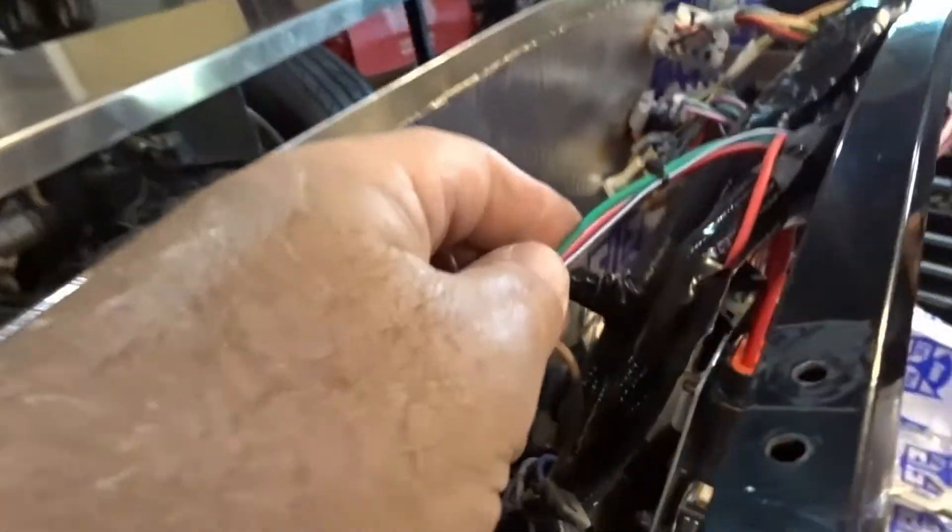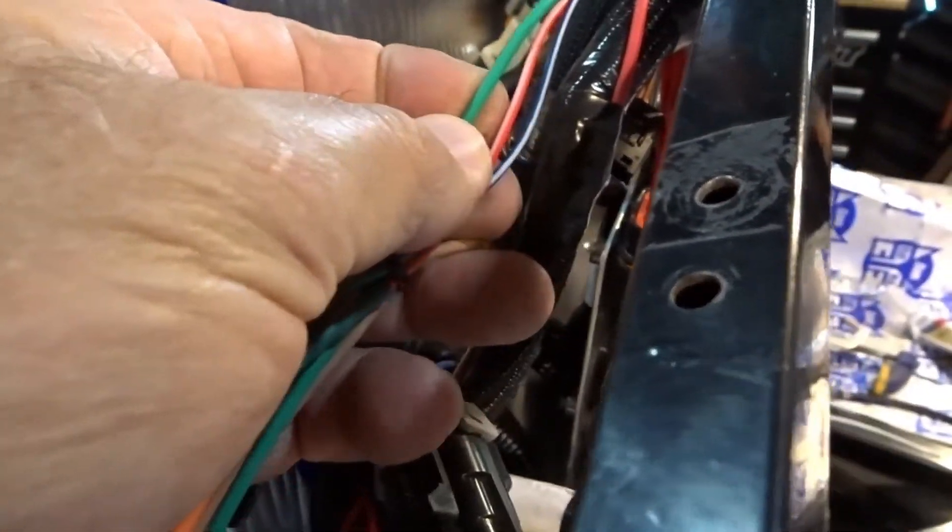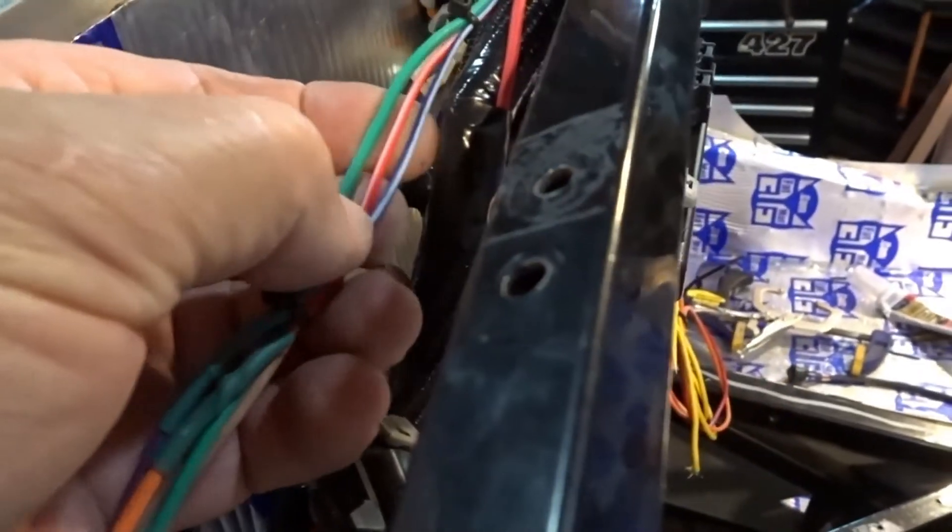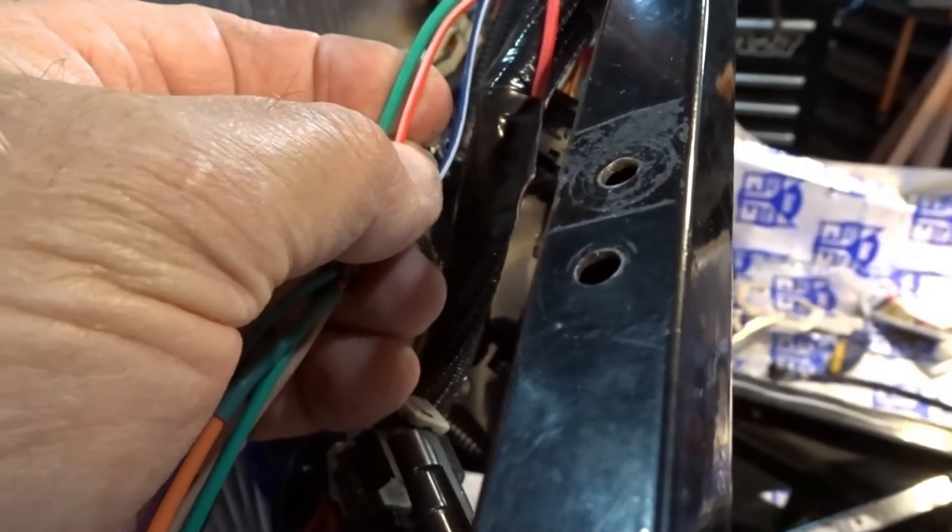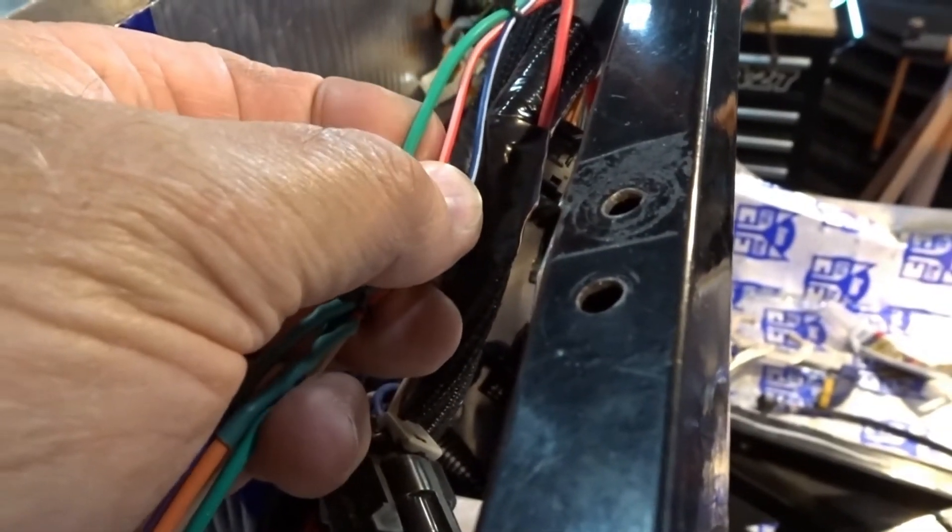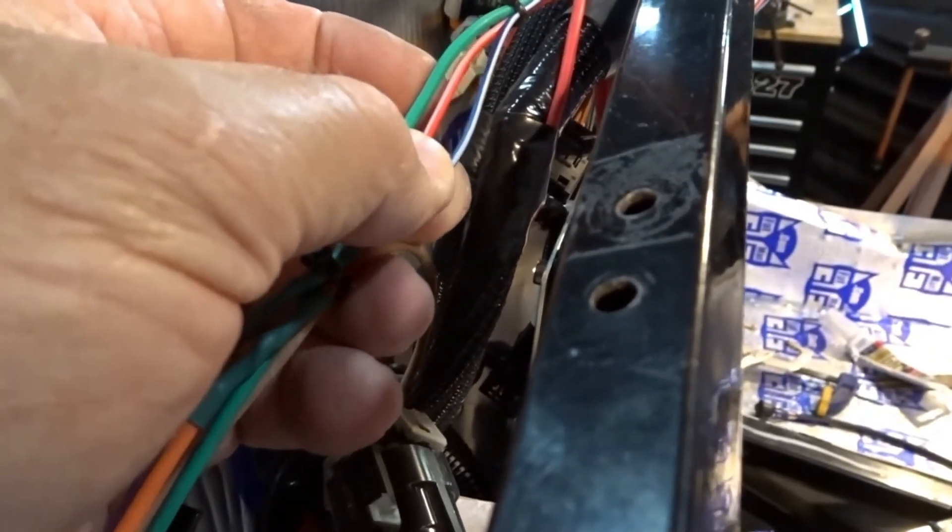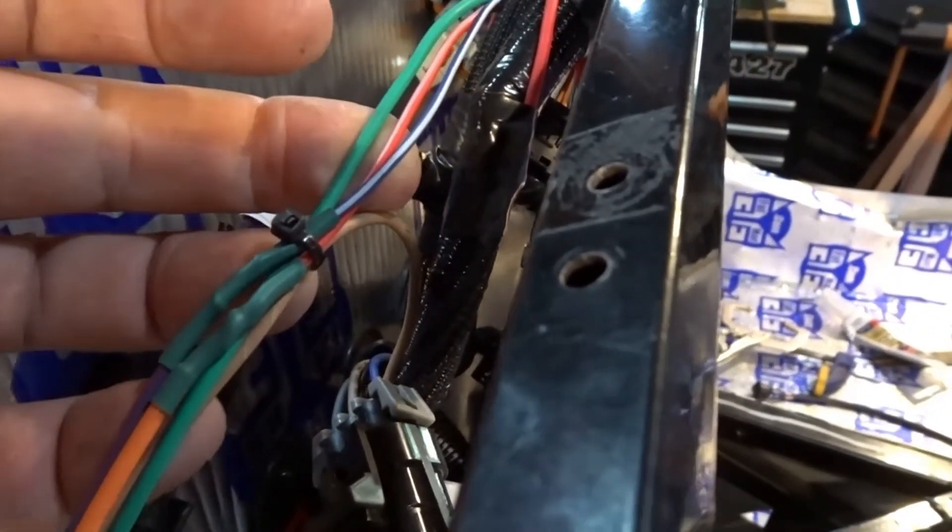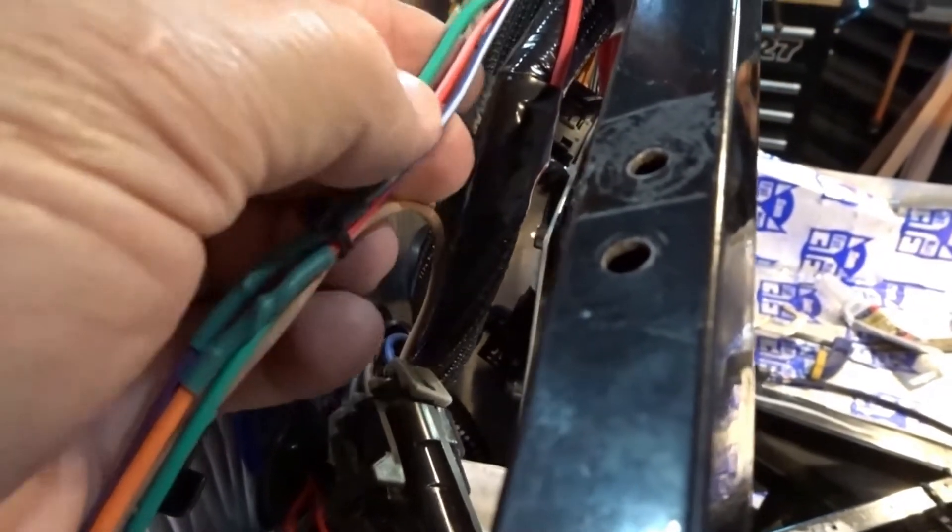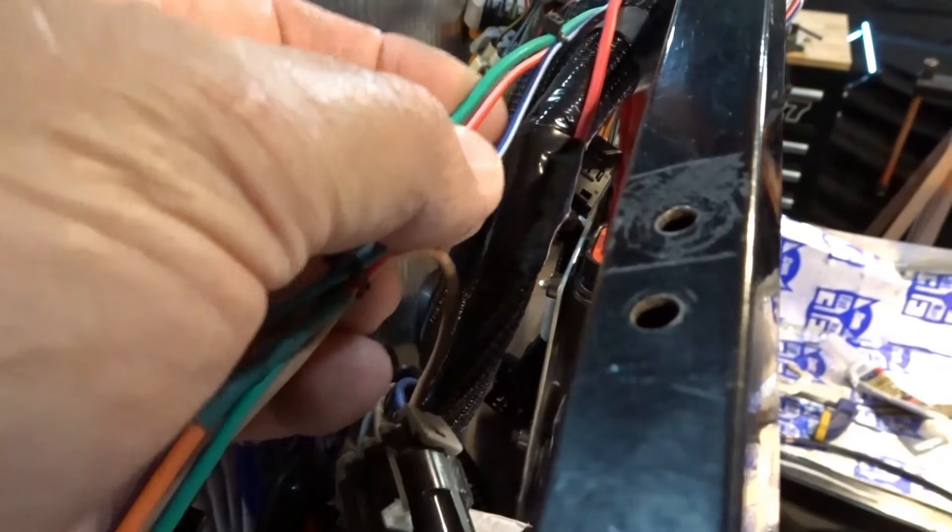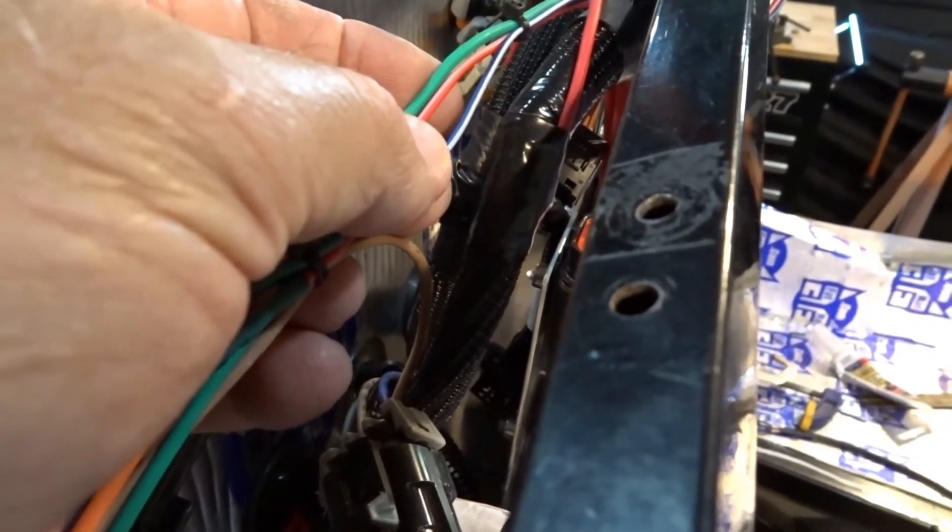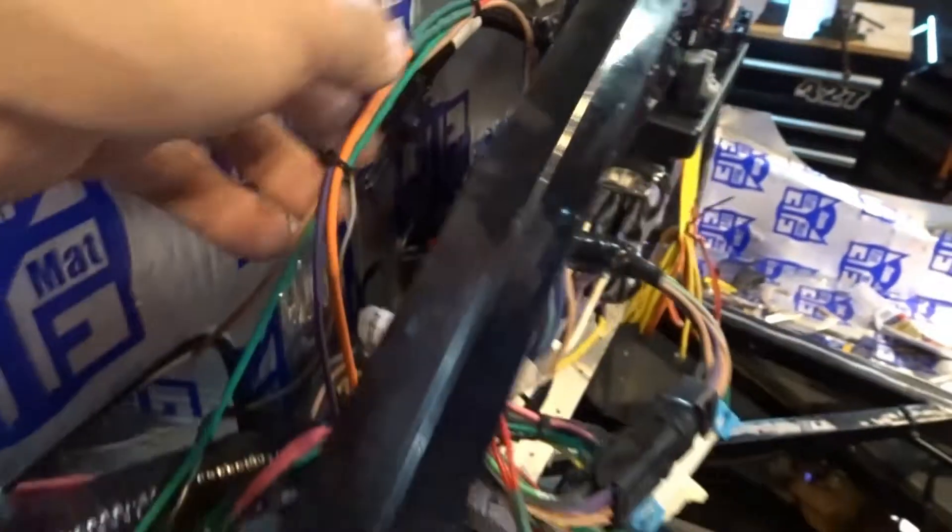The Holley system right here, we've got a green wire that is for the fuel pump. We've got this red with a white stripe that is its switched power. And we have the blue wire, which is a tach output from the Holley. So that's going to send a signal to our tachometer on the dash.